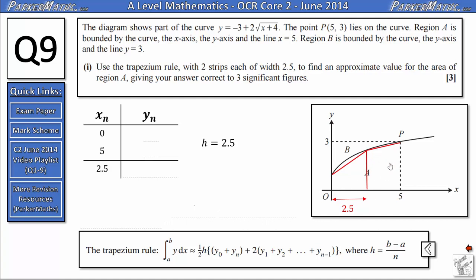So to find the value of y when x equals 0, we substitute x equals 0 into this formula. That means we get the square root of 4, which is 2. Multiply that by 2 is 4. So we're doing minus 3, add 4. So that gives us 1. When x equals 5, we get the square root of 9, which is 3. Multiply it by 2, that gives us 6. So we've got negative 3 plus 6 gives us 3. When we substitute in 2.5, we get the square root of 6.5, which is a surd. So we aren't going to work that bit out yet. We're just going to write it as minus 3 plus 2 root 6.5.